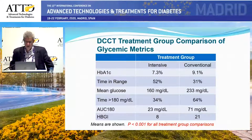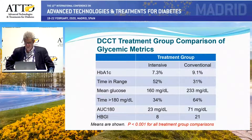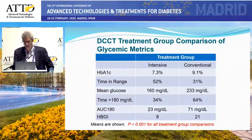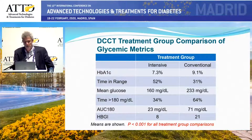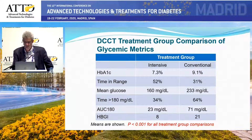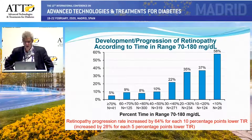Comparing the DCCT intensive group to the conventional group, the A1C difference — well known and published — was 7.3% in the intensive group versus 9.1% in the conventional group. When we look at time in range, we see a difference of about 21% between the intensive and conventional groups. Just taking those seven points and accumulating them, we see reasonable separation similar to what we see with hemoglobin A1C.